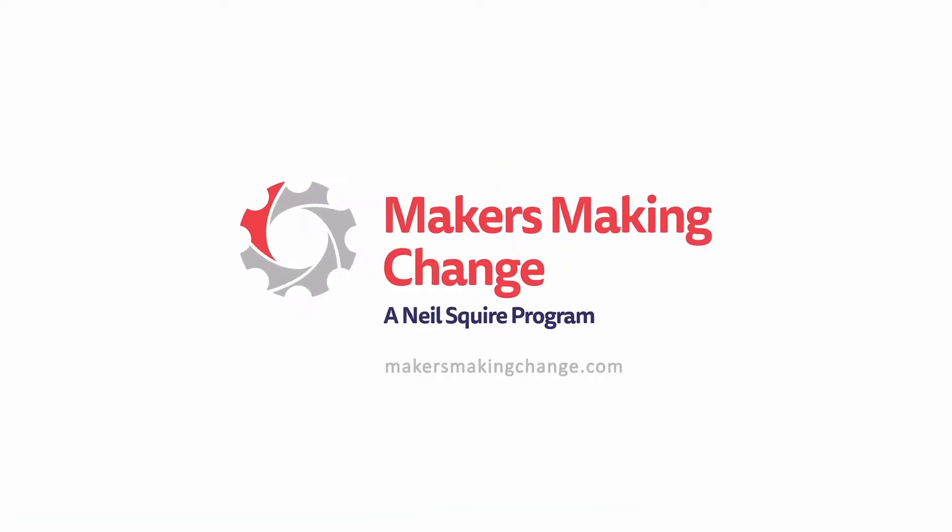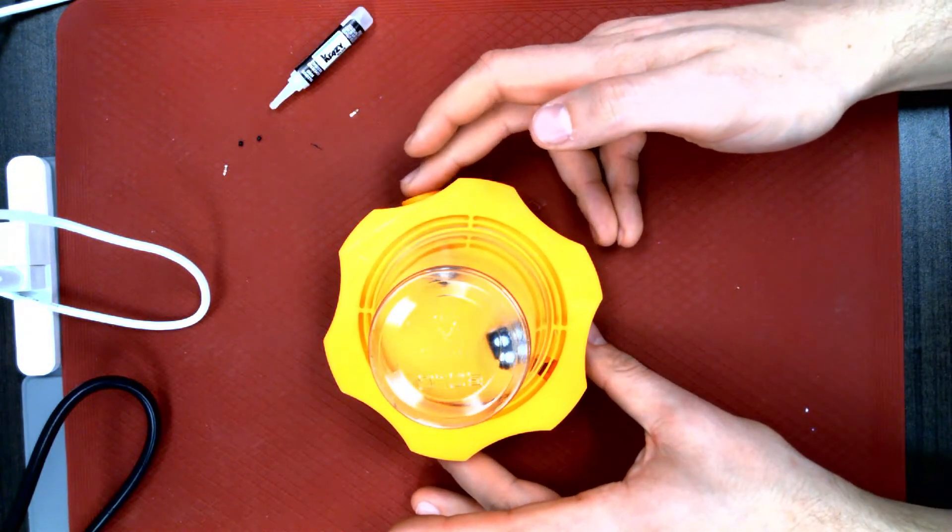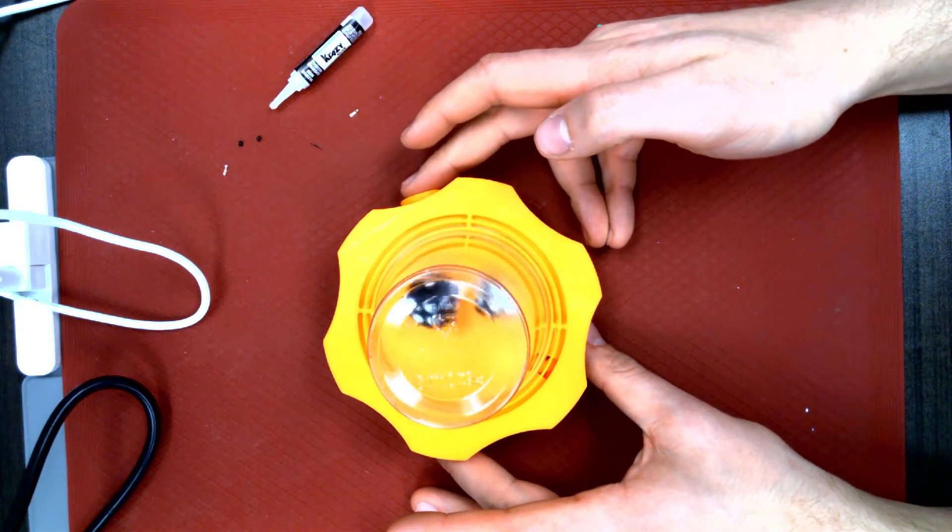Hi and welcome to a Maker's Making Change tutorial. In today's video, we'll show you how to build a device from our open source library called the Rumble Plate Dice Roller.